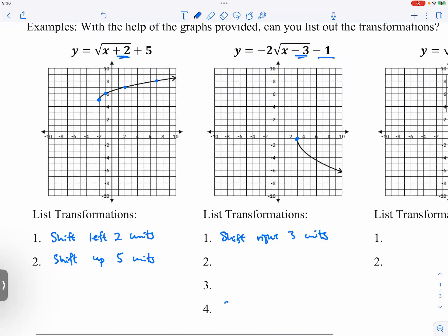And shifting up and down is always the last, because it's the farthest away from the x, so we would do the vertical shifting very last.